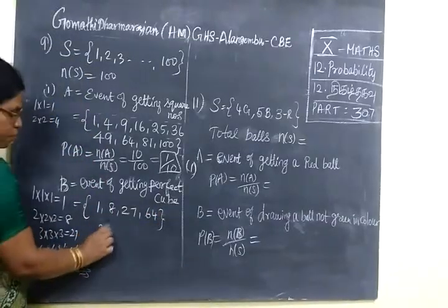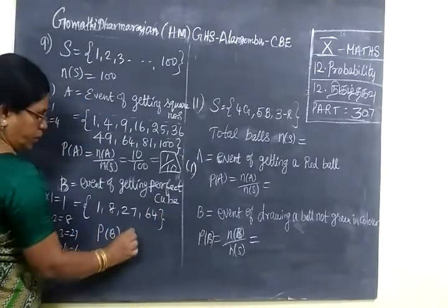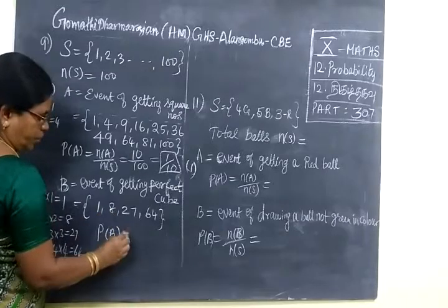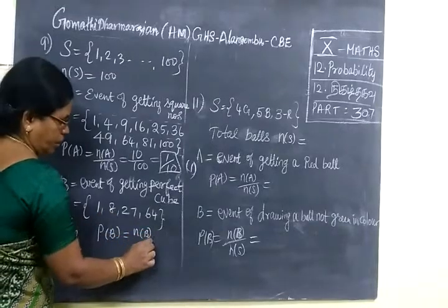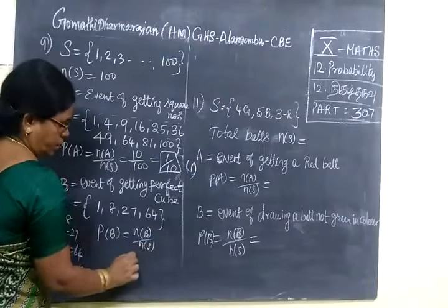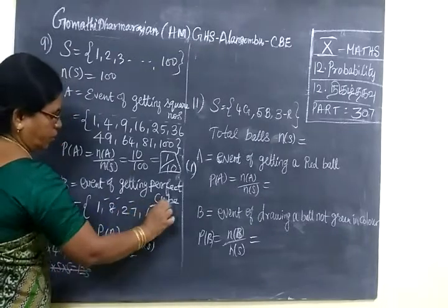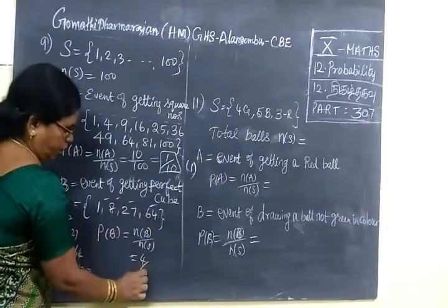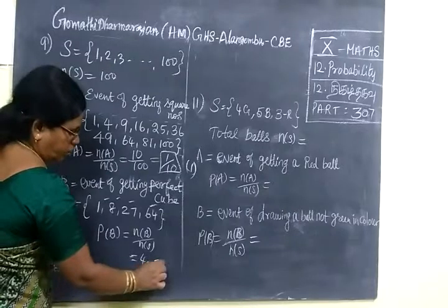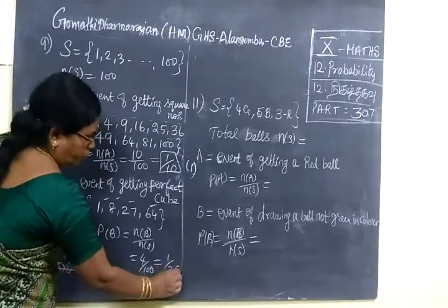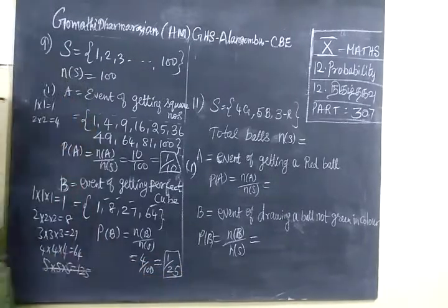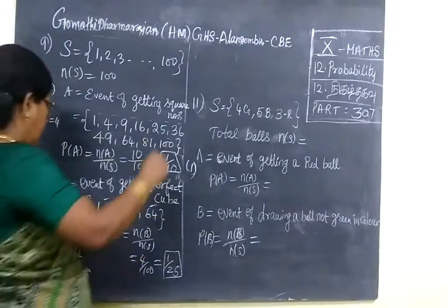So P(B) equal to n(B) by n(S). N(B) by n(S) equal to 1, 2, 3, 4 numbers. So 4 by 100. If we cancel, you get 1 by 25.